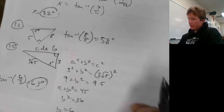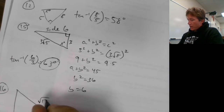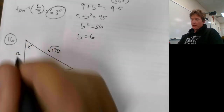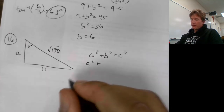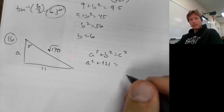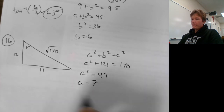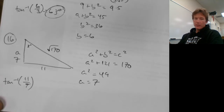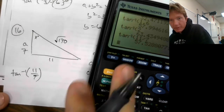Let's look at number 16 — this one's actually a little bit simpler. I need to find the missing side. Using Pythagorean theorem: A squared plus 11 squared equals the square root of 170 squared. 11 squared is 121, and the square root of 170 squared is just 170. Subtract 121, that's 49. So A equals 7. To get X, I do inverse tangent of opposite over adjacent: inverse tangent of 11 over 7. To the nearest degree, that's 58 degrees.